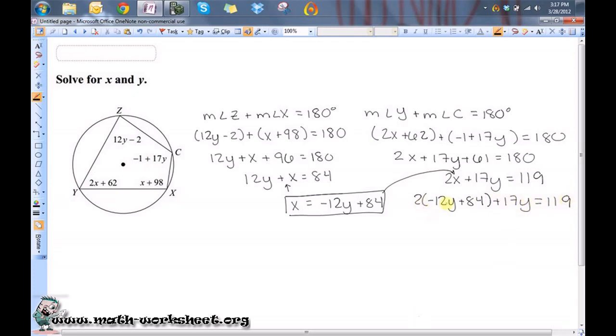Now let's just solve for Y. I'll first distribute the 2 to each of these terms here. So that's going to give me negative 24Y plus 168 plus 17Y equals 119. Now I'll combine my Ys. So that's negative 7Y plus 168 equals 119.